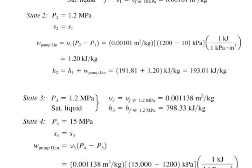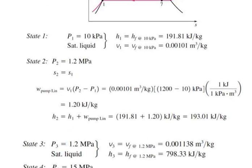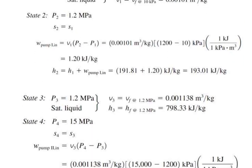Continuing to state 5: P5 = 15 MPa, T5 = 600°C — superheated steam zone. From steam tables, H5 = 3583.1 kJ/kg and S5 = 6.6796 kJ/(kg·K). State 6: P6 = 1.2 MPa, S6 = S5. From steam tables, H6 = 2860.2 kJ/kg and T6 = 218.4°C. State 7: P7 = 10 kPa, S7 = S5. All states are isentropic expansions, so entropy is perpendicular in the entropy diagram.